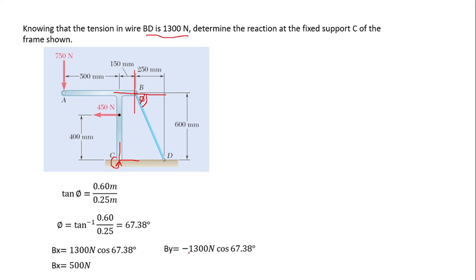Now let's resolve it in the y-component. Since this side is on the negative y-component, we get By = −1300 N × sin(67.38°) = −1199.99 newtons. Now we can apply the equilibrium principle: the sum of all forces in the x-component equals zero, and the sum of all forces in the y-component equals zero, to find the forces at C and the resultant.